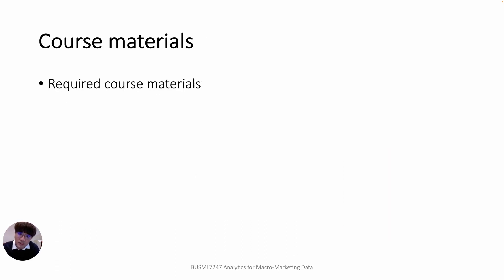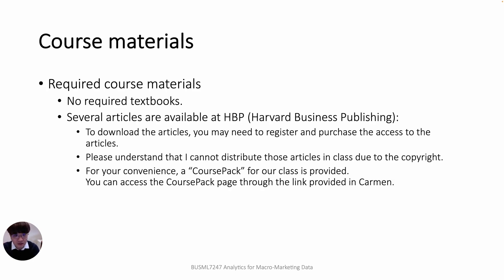Now let's talk about the course. First, course materials. There are no required textbooks. All required course materials will be provided through our course webpage. However, several articles are available at Harvard Business Publishing only. To download such articles, you may need to register and purchase the access to the articles. Please understand that I cannot distribute those articles in class due to copyright. For your convenience, a course pack for our class is provided. You can access the course pack page through the link in our course webpage and purchase the articles at once.